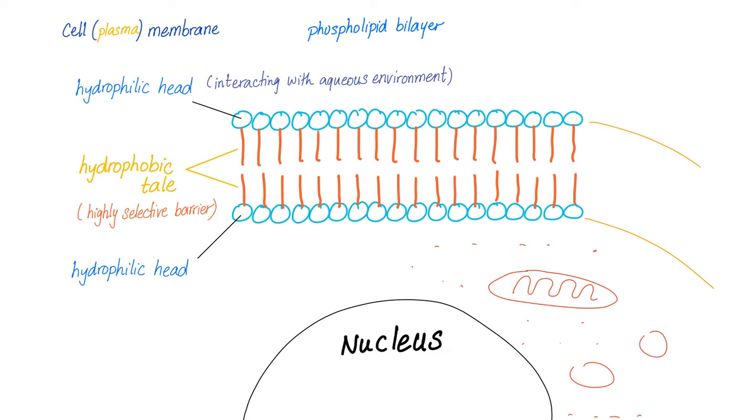So here is the cell membrane or the plasma membrane. It's a phospholipid bilayer. It has a hydrophilic head - hydro means water, philic means lover - the head that loves water. But it has a hydrophobic tail, a tail that hates water.